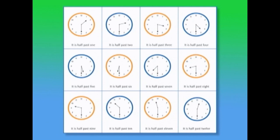But first, let's count the clocks. How many clocks can you see in the first row? 1, 2, 3, 4. How many clocks can you see in the second row? 1, 2, 3, 4.